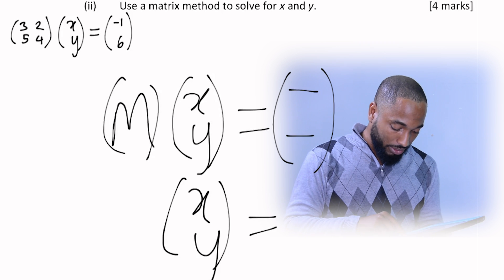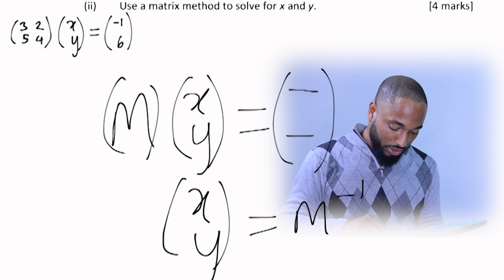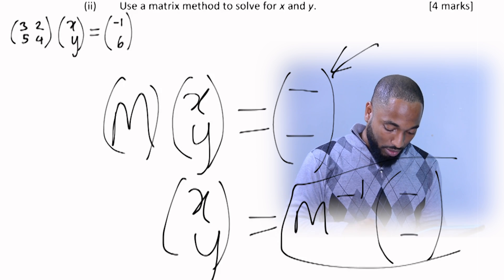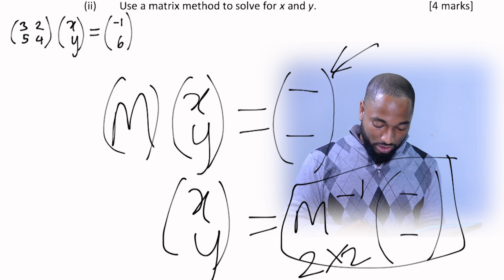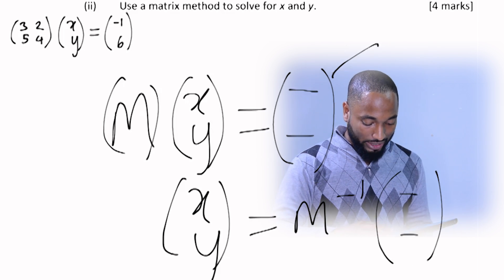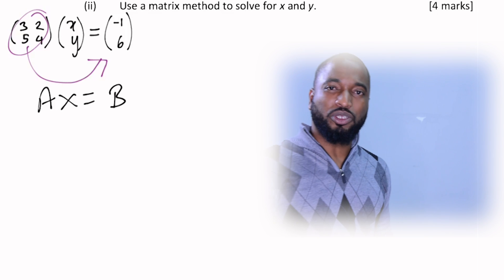When the matrix comes across M inverse, this matrix is going to multiply by whatever was here. And so that's a two by two matrix being multiplied by a two by one matrix. This may seem a little chaotic. Now let's try and put some order into this.